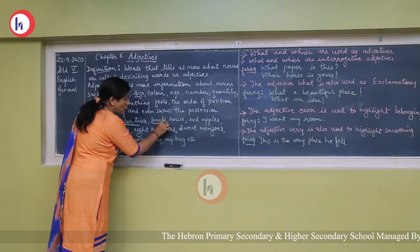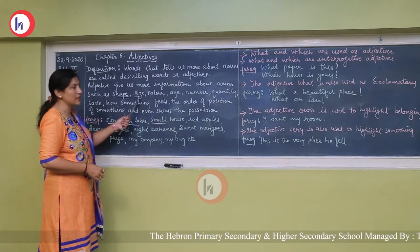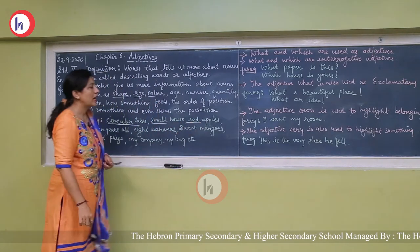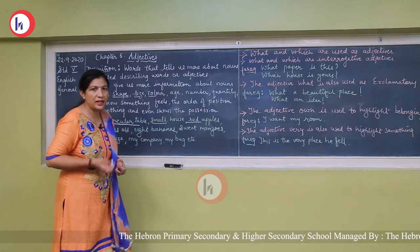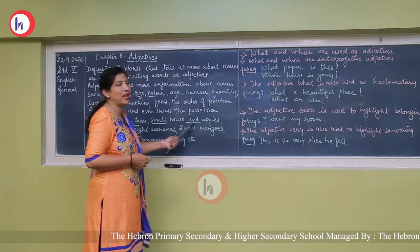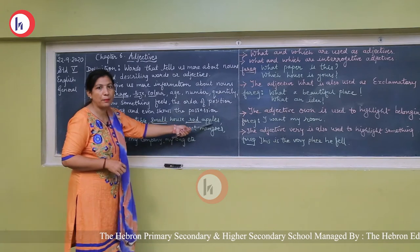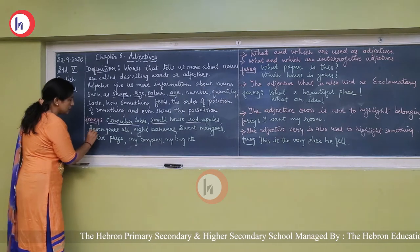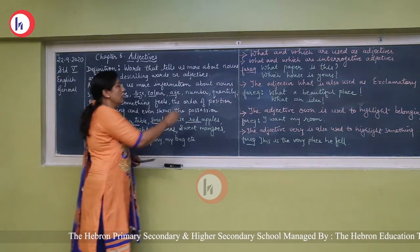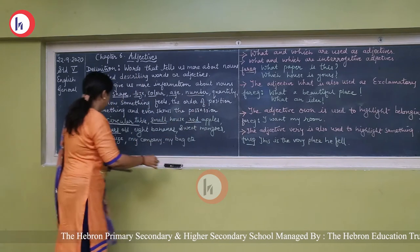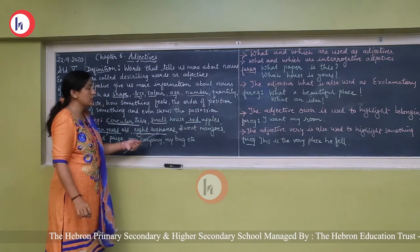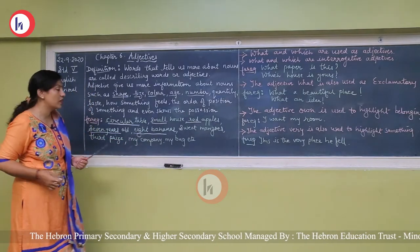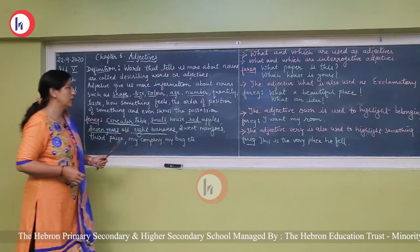Size — small house; I have given the example of size. Color — red apple; I am telling more about the apple. I can say green apple, red apple — I am describing more about the noun; apple is a noun. Age — 7 years old. Number — 8 bananas. Bananas are a noun, a common noun, but I am telling 8 bananas, 2 bananas, 5 bananas — I am telling more about the noun.